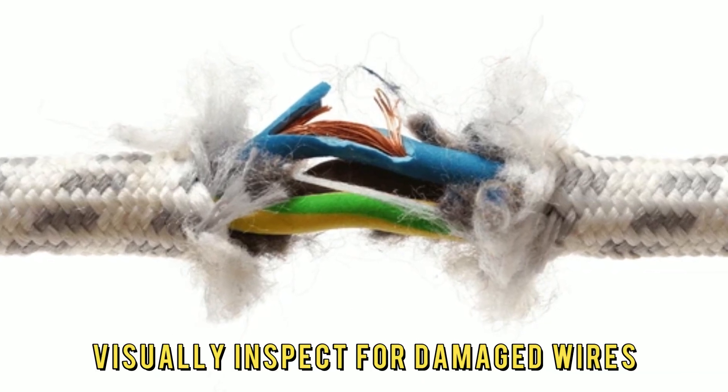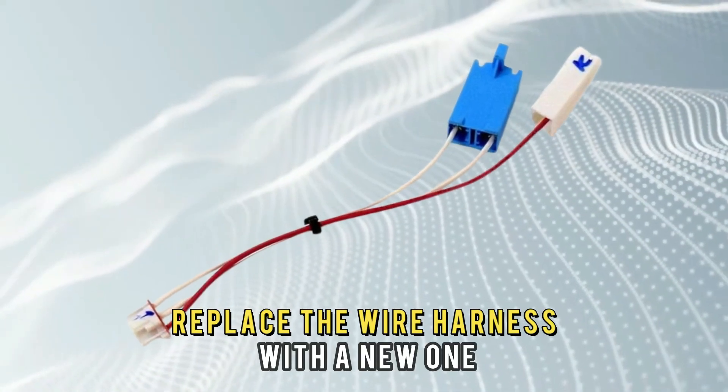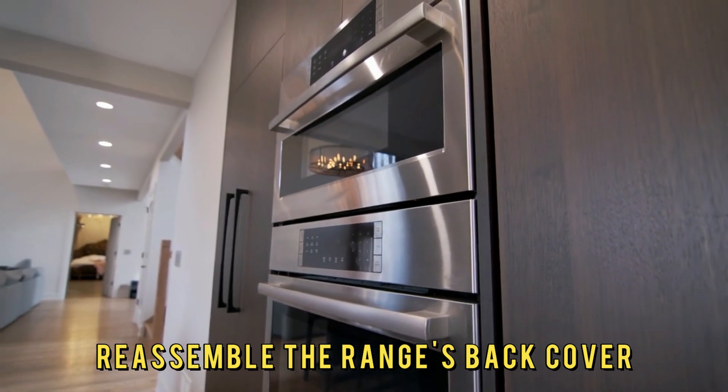Visually inspect for damaged wires. If there are any damages, replace the wire harness with a new one. Reassemble the range's back cover.